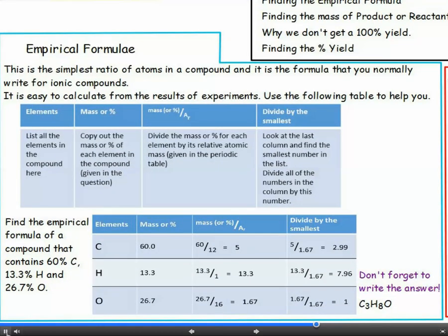In this example, the mass or percent given for carbon is 60%. In the third column, we have divided this by the AR from the periodic table and got 5. We do the same thing for hydrogen.